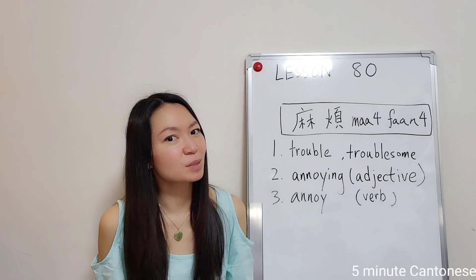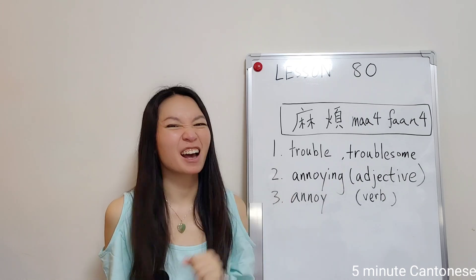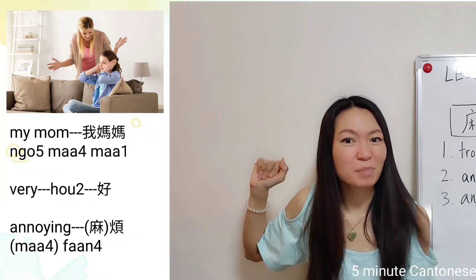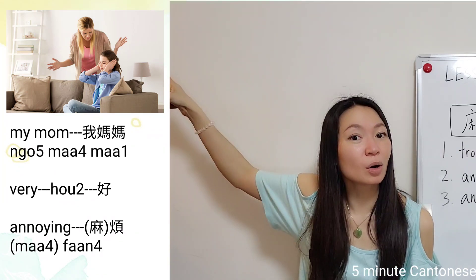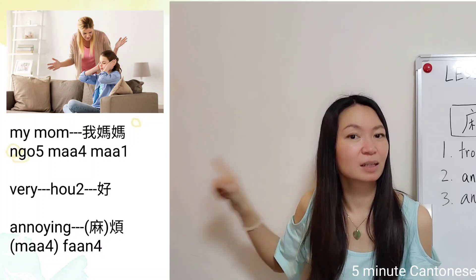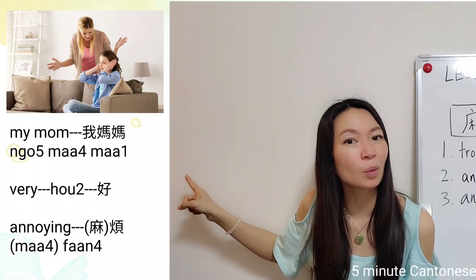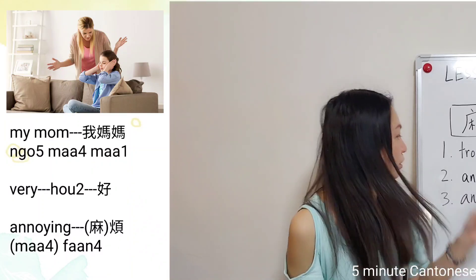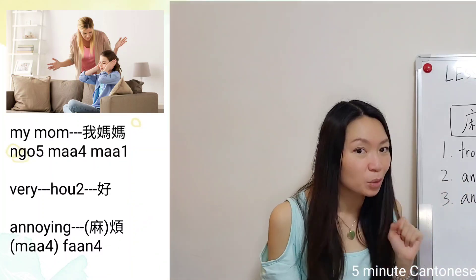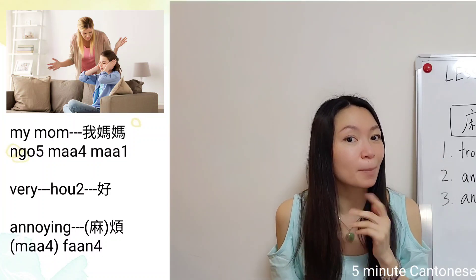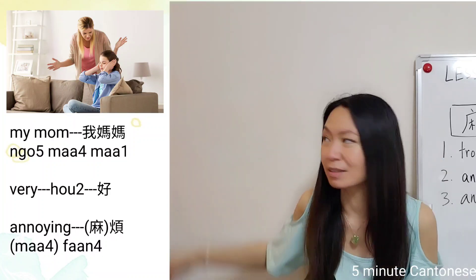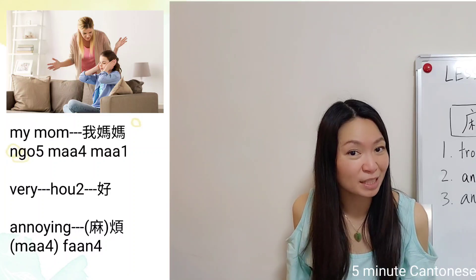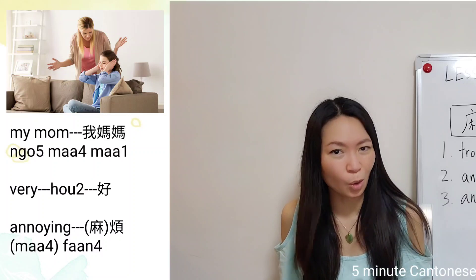Now let's see the second meaning, which is the most common usage: 'annoying.' For example, 'My mom is very annoying.' In Cantonese: 我媽媽好麻煩。 For 'annoying' or 'annoyed,' you can skip the word 麻 and just say 煩, or you can keep it. 我媽媽好麻煩 or 我媽媽好煩。